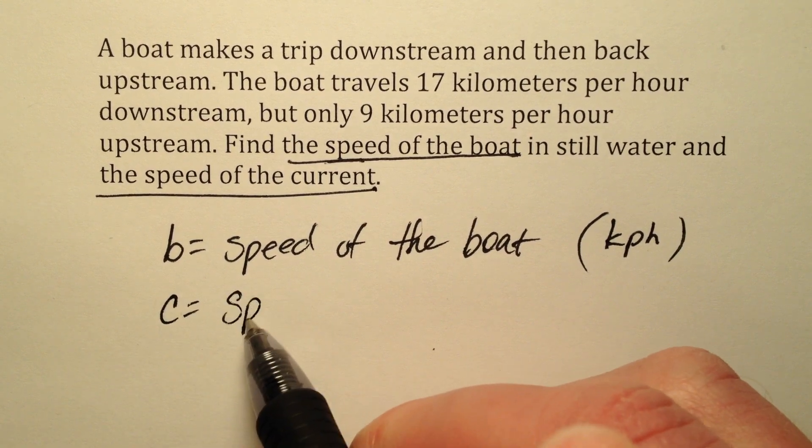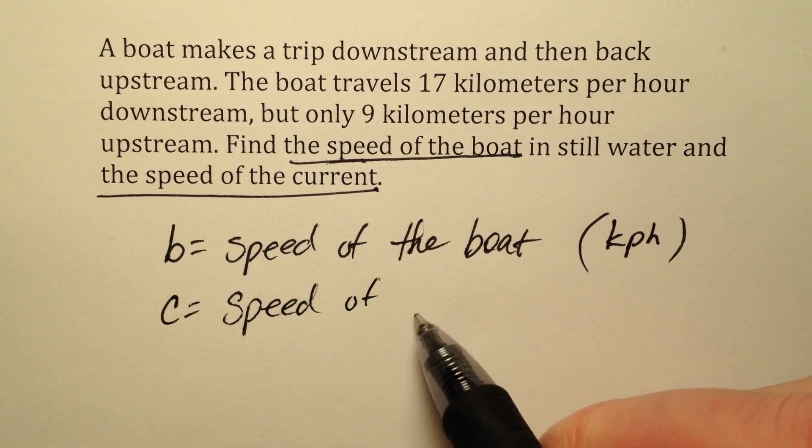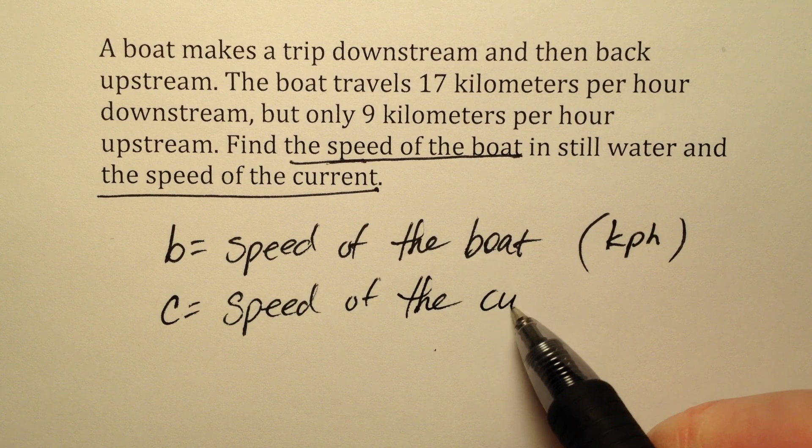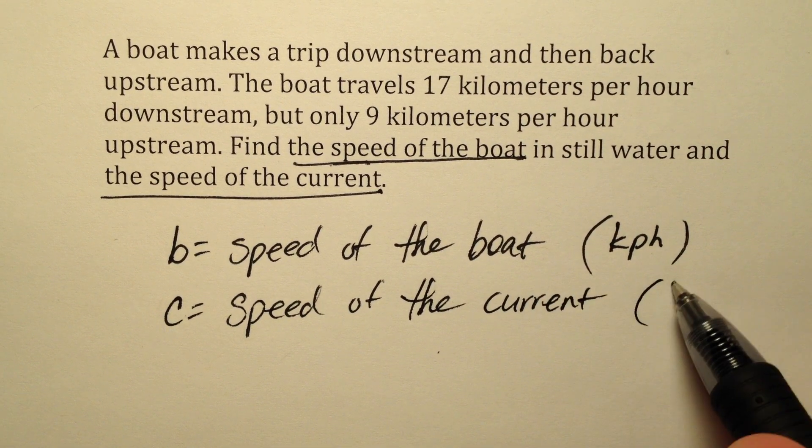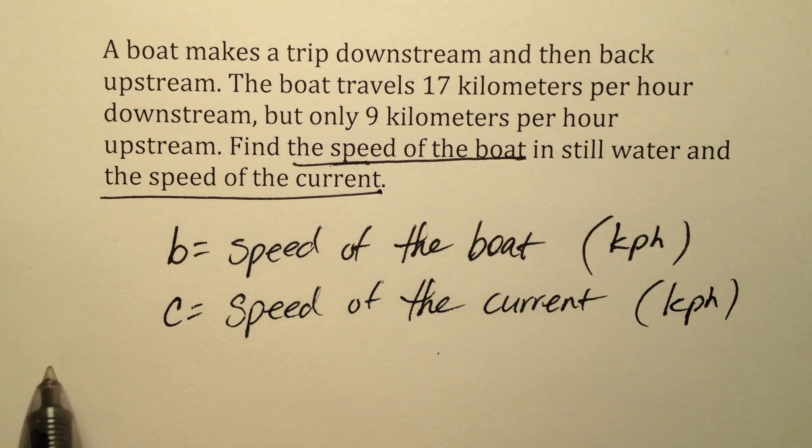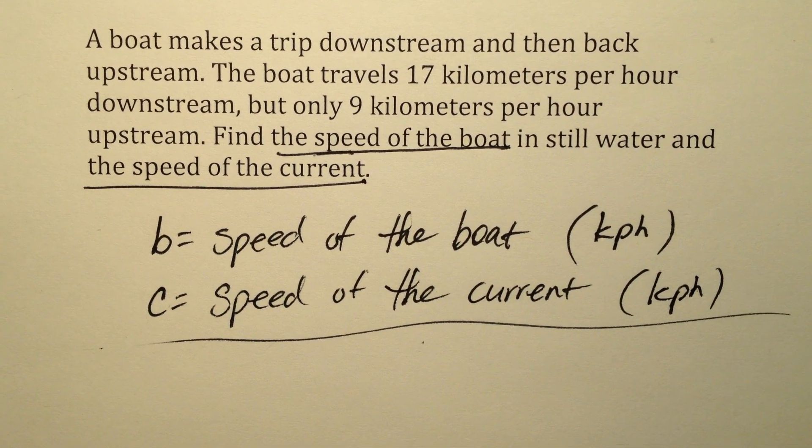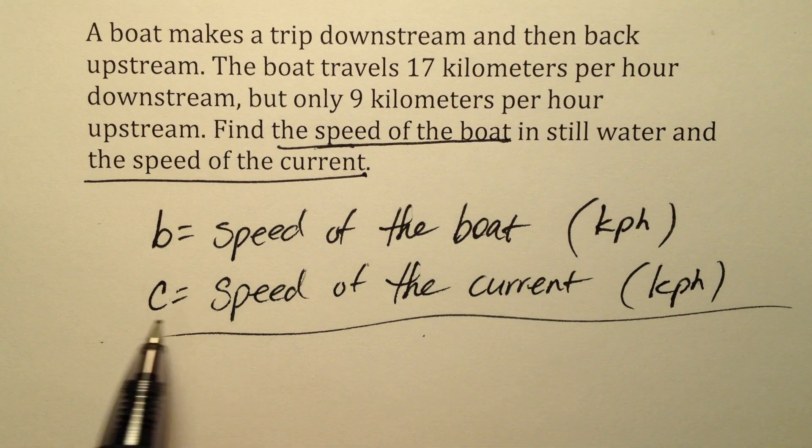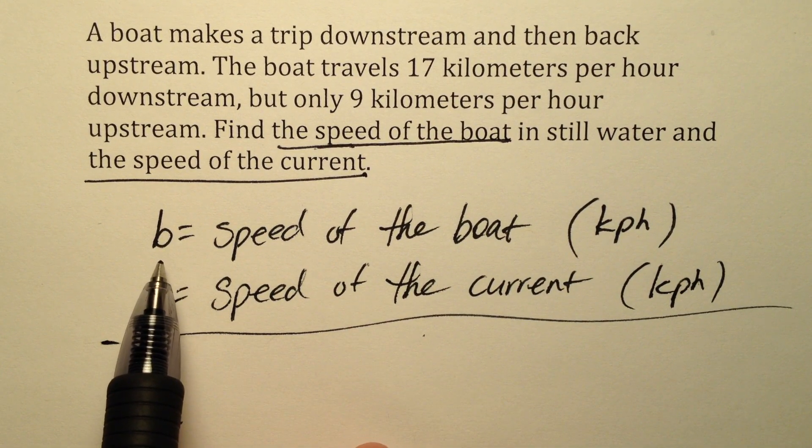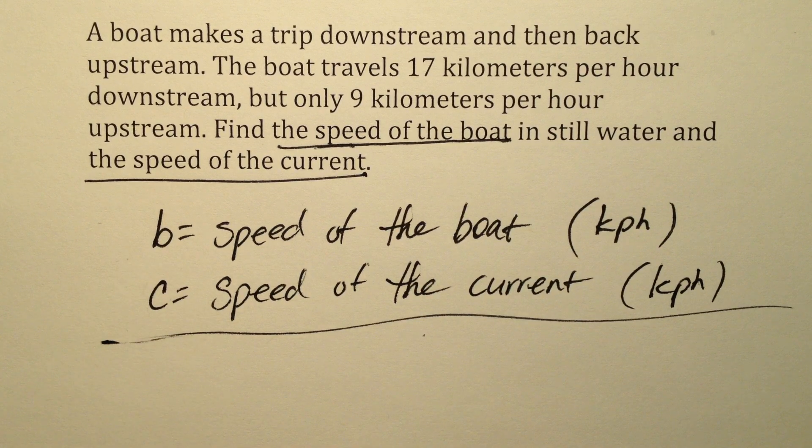And then c is going to be the speed of the current. And again, that's going to be measured in kilometers per hour. So here's our variable definitions. So I know that ultimately I'm going to be determining values for b and c.